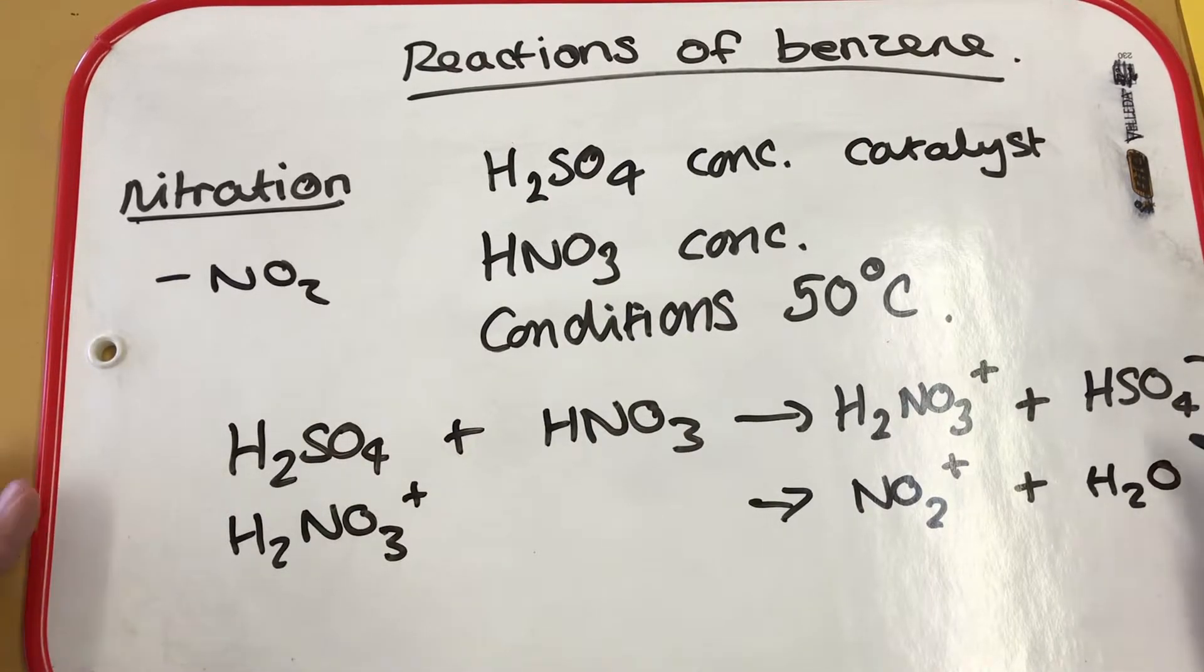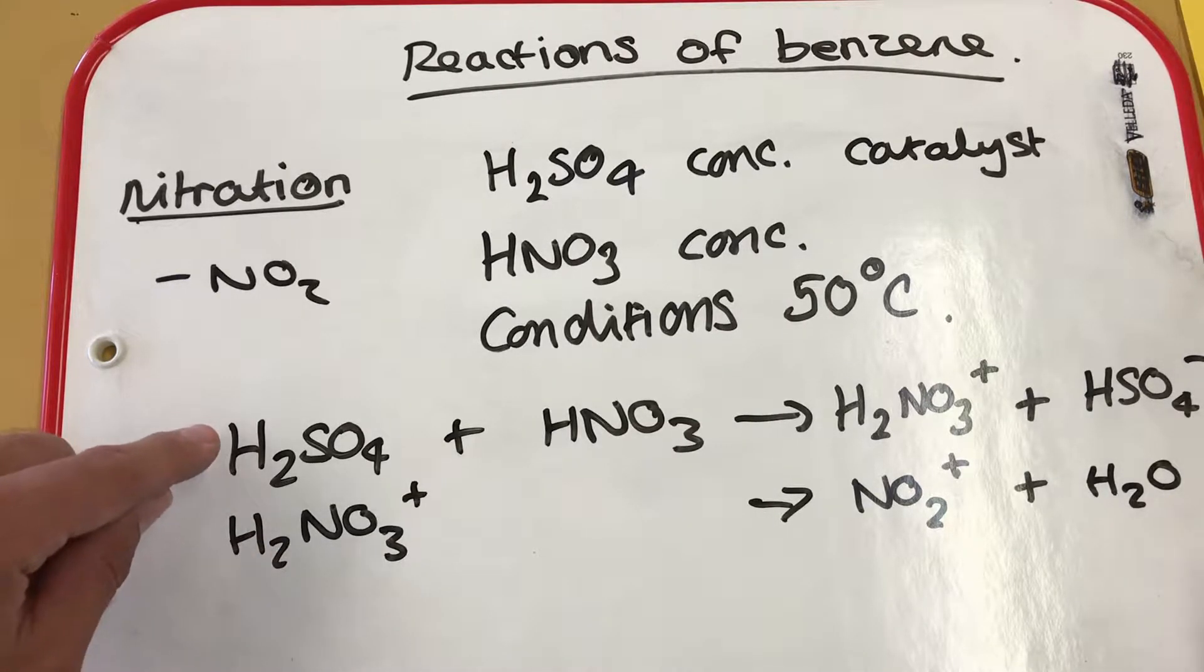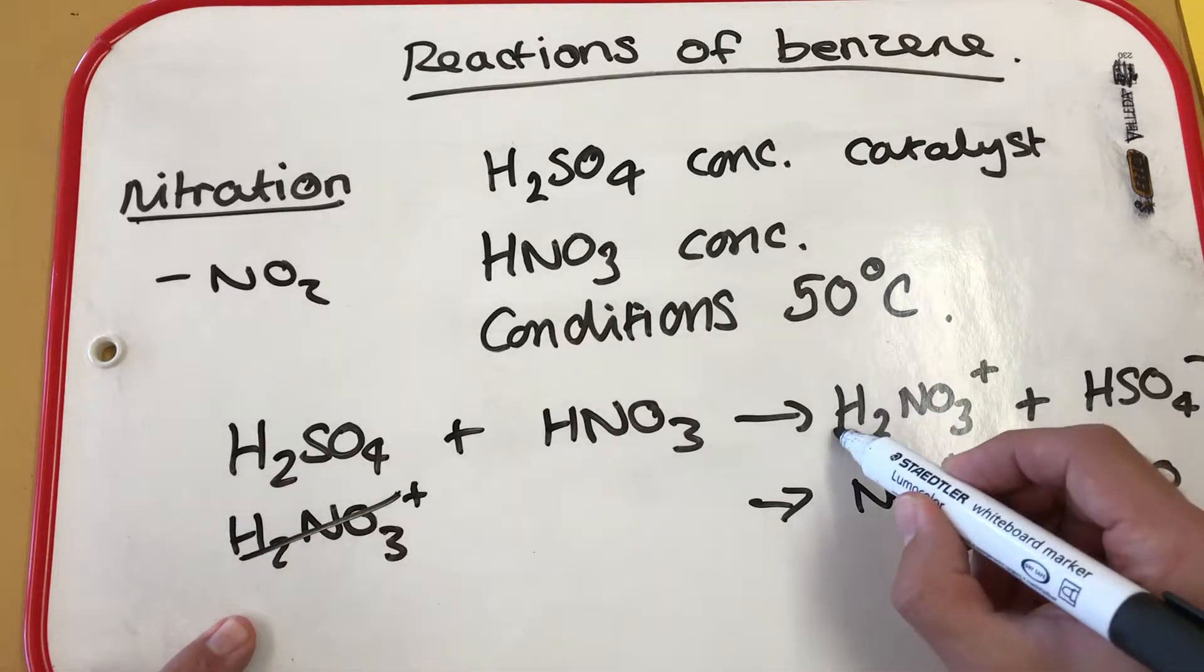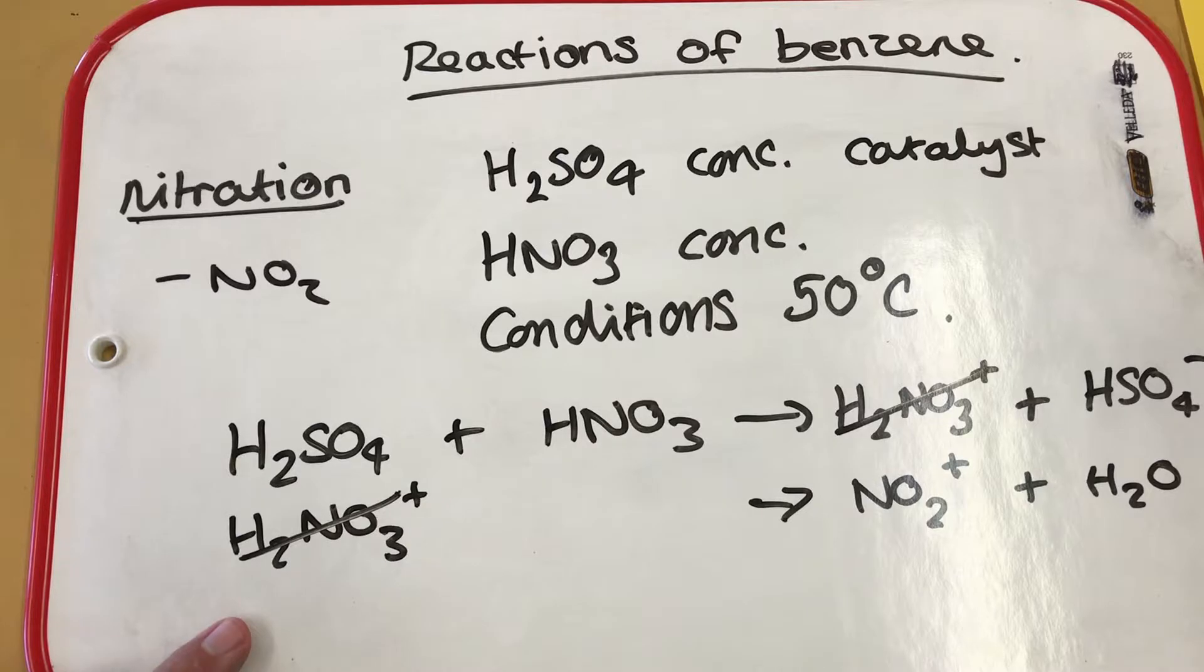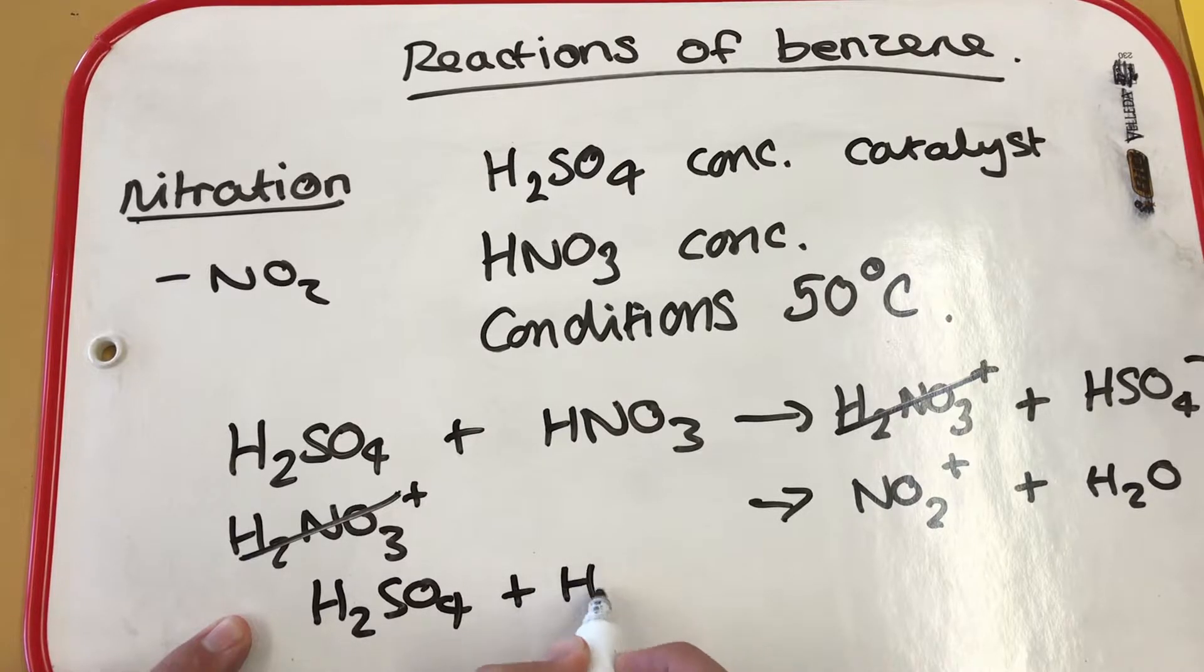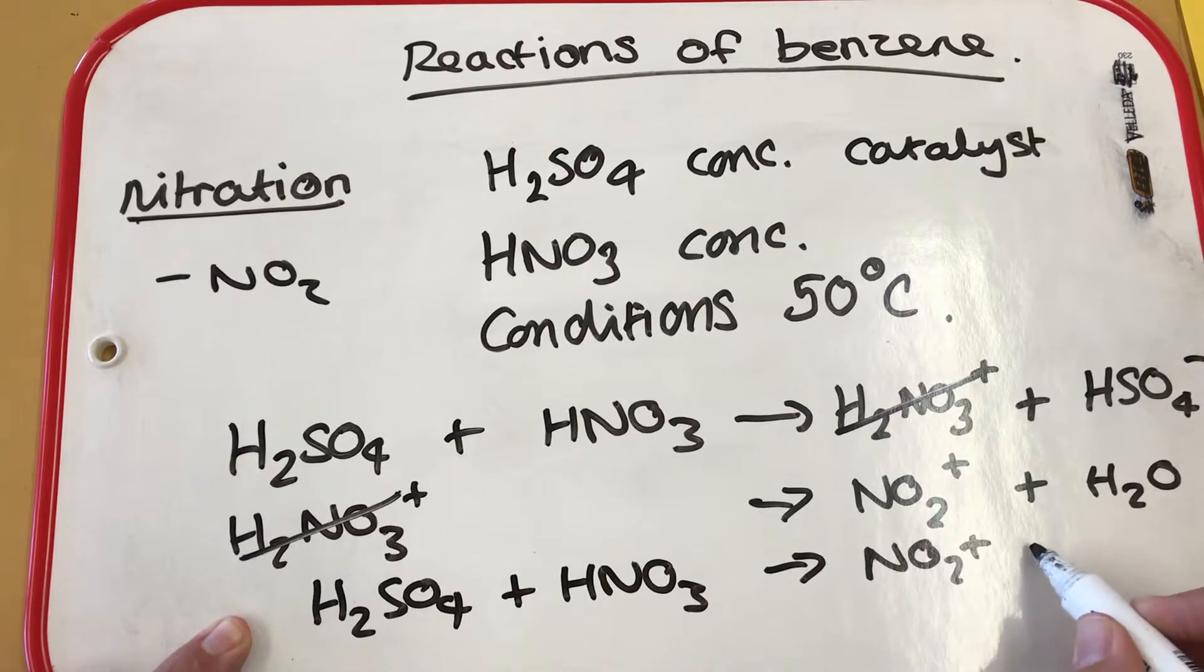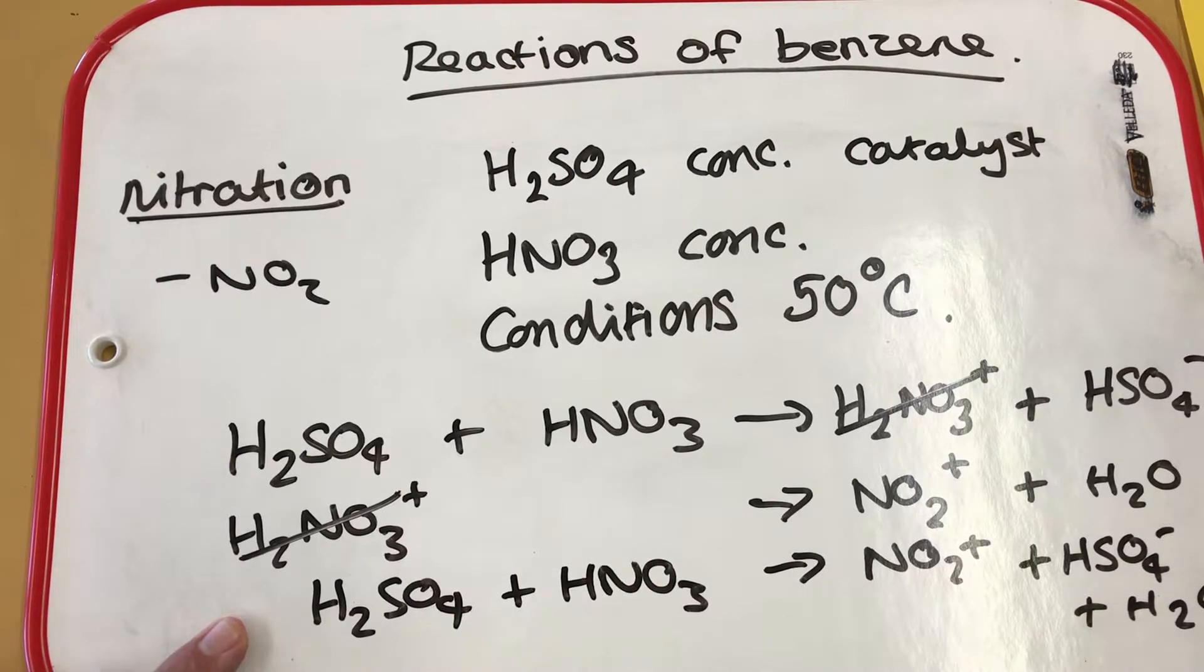You can put these two equations together by cancelling down things that appear on both sides. So for example, what you need to do is add this equation to this one. If you add this equation to this one, the H2NO3+ on either side will cancel each other out, and you'll be left over with an overall equation of H2SO4 plus HNO3 to produce NO2+, plus HSO4- plus H2O. So this is our overall equation here for the production of this really important electrophile here.